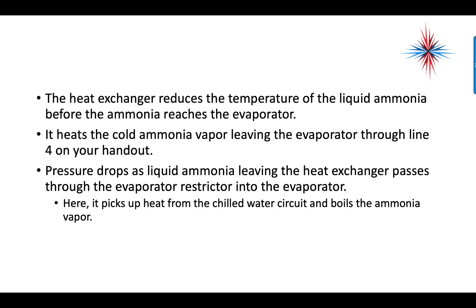The heat exchanger reduces the temperature of the liquid ammonia before it reaches the evaporator. It also heats the cold ammonia vapor leaving the evaporator through line four. The pressure drops as the liquid ammonia leaving the heat exchanger passes through the evaporator restrictor into the evaporator.